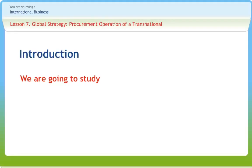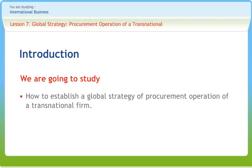A supply chain consists of all parties involved directly or indirectly in fulfilling a customer's request. The supply chain includes not only manufacturers and suppliers but also transporters, warehouse retailers and even customers themselves. The goal of a supply chain should be to maximize overall supply chain profitability. In this lesson we are going to study how to establish a global strategy of procurement operations of a transnational firm.